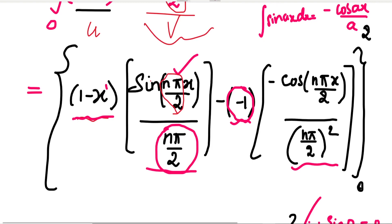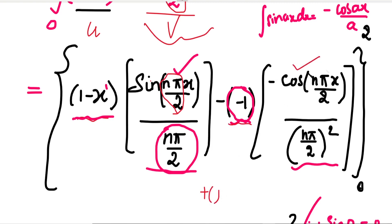In the last term, the first function's differential value is -1, which is a constant. The differential of a constant is 0, so we stop here. Now apply the limits from 0 to 2. The sin terms cancel out because substituting either the upper limit (x=2) or lower limit (x=0) into sin(nπx/2) gives sin(nπ) = 0 or sin(0) = 0 respectively.